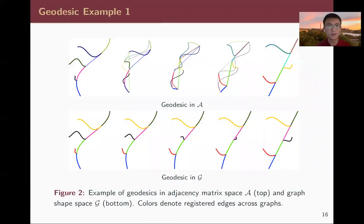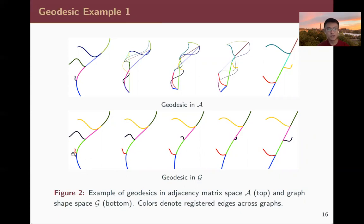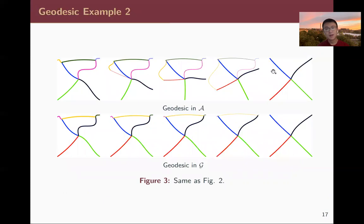Here are some geodesic examples. For two different graphic objects, the shortest path in the adjacency matrix space without node ordering is very messy. However, if we successfully register the nodes using our algorithm and also register the edges using the elastic Riemannian framework, we can observe a much more natural deformation from one object to the other. We also show another example with two objects, one with a loop and one without. In summary, the geodesic in script J is a much more natural deformation than in script A without node ordering.